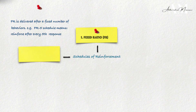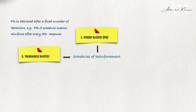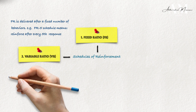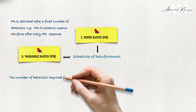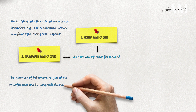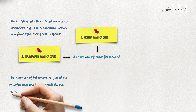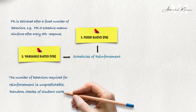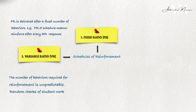The second type of reinforcement is variable ratio. This is delivered after an average number of responses, which can vary. The number of behaviors required for reinforcement is unpredictable.